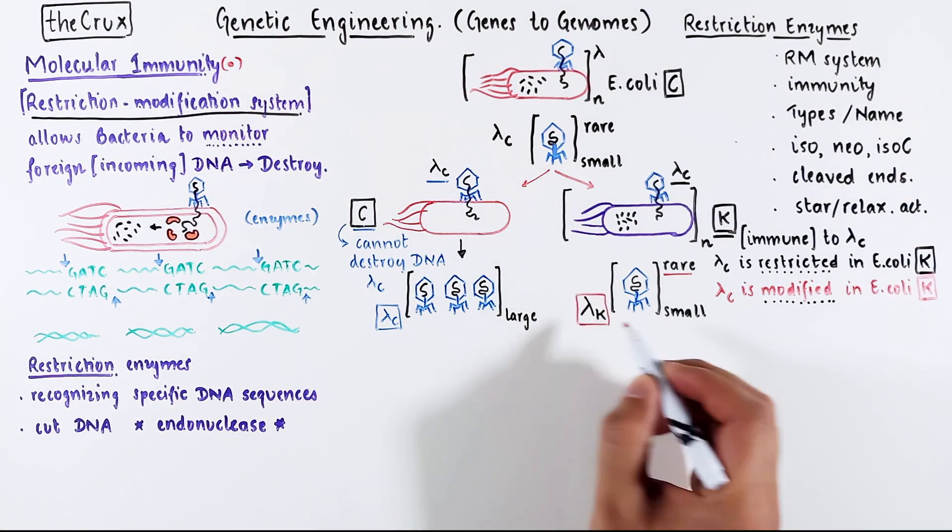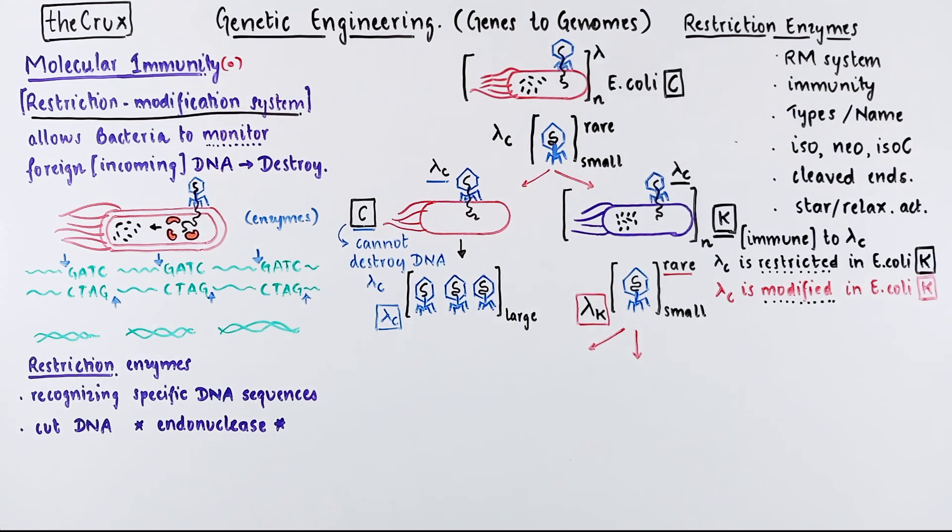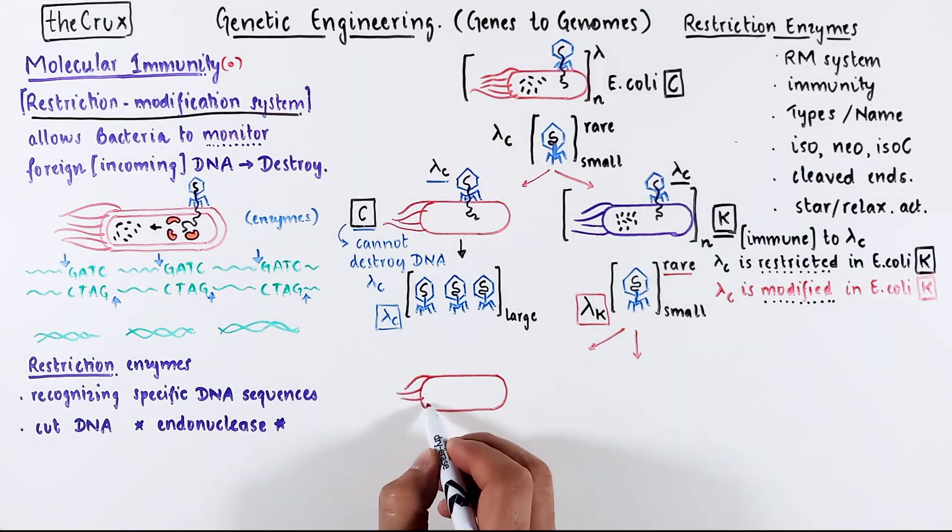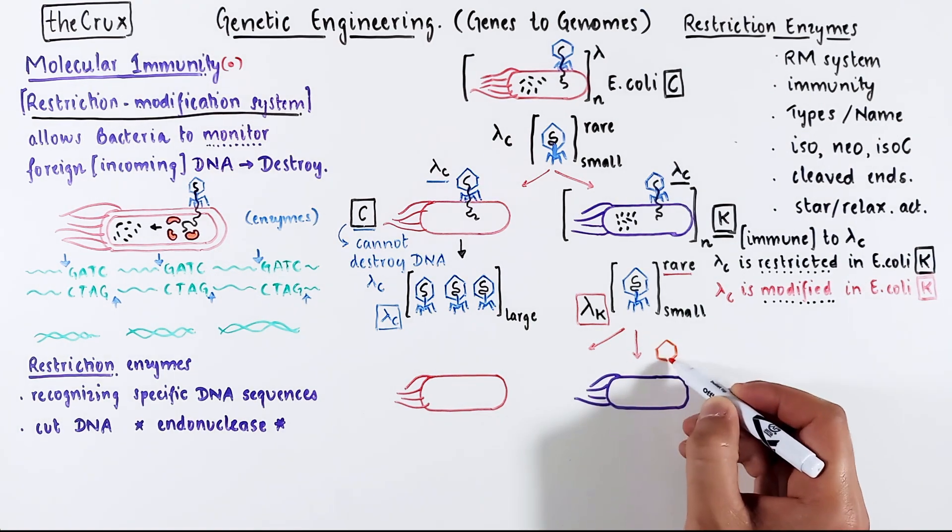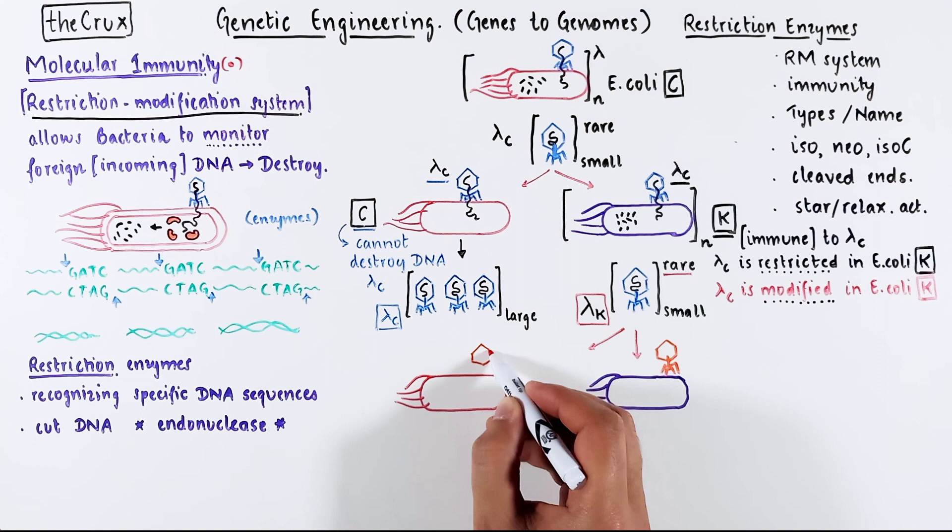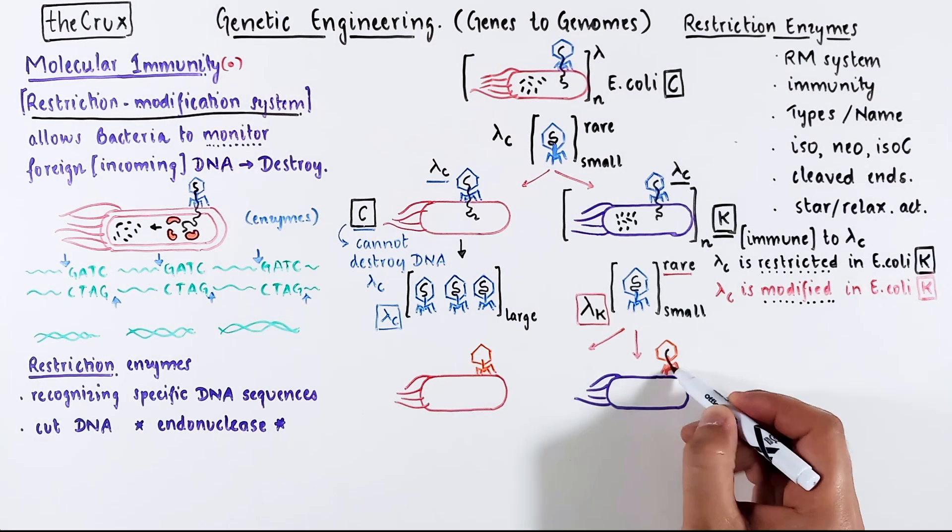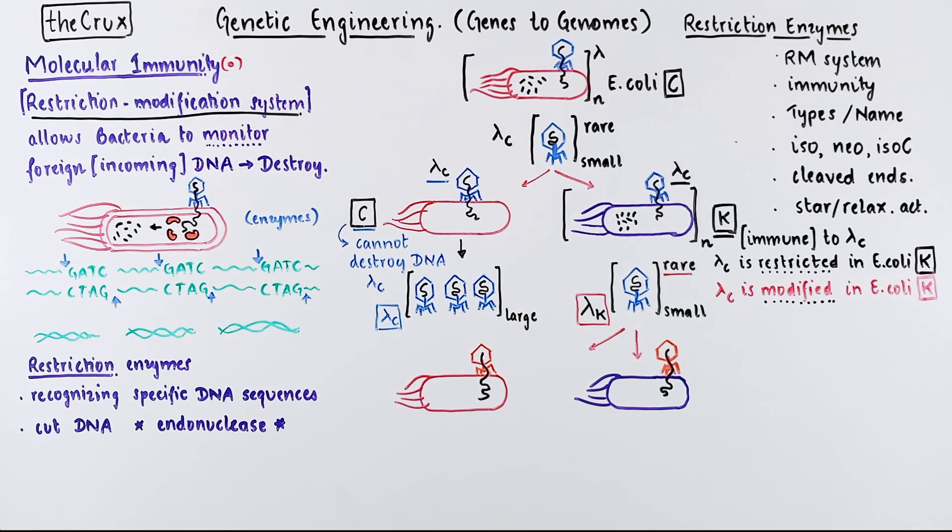You can repeat the experiment again by using lambda K as the starting virus and infect both C and K bacteria. You can pause the video and try to predict what the outcome would be. What are the names of the viruses produced in both these infections and whether they are produced in small or large amounts. The bacteria K will be unable to protect itself from the lambda K, and this infection will lead to large amounts of lambda K virus particles.